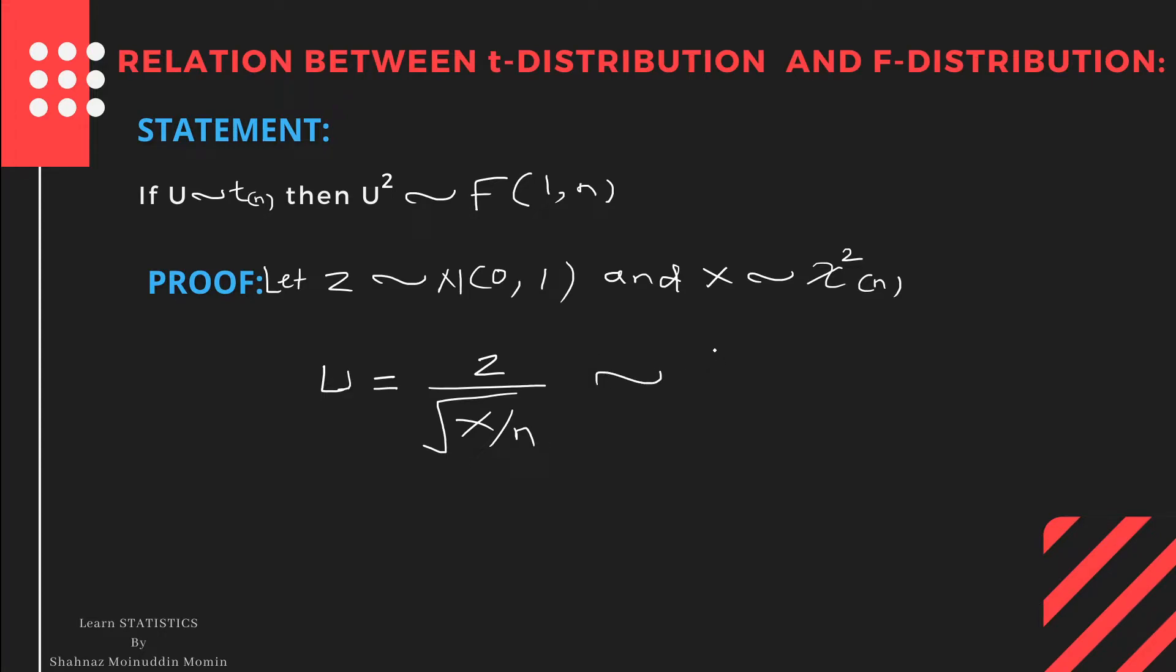This follows a T-distribution with n degrees of freedom. Here, Z and X are independent.